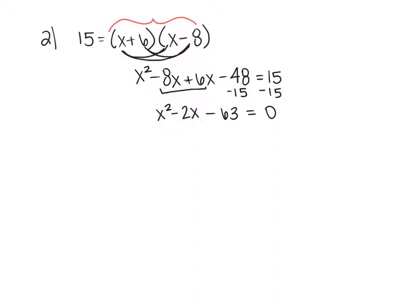Now I'm set up to factor. I don't have an A in front, which is great. I'm looking for all my factors of 63. I want two numbers that multiply to negative 63, which tells me 1 negative, 1 positive, and add to negative 2. I start with 63 and 1, then 3 and 21, then 7 and 9. Those two are a difference of 2, so those are my numbers.